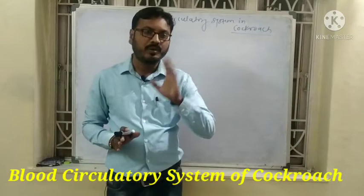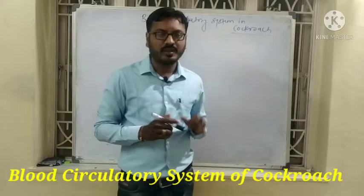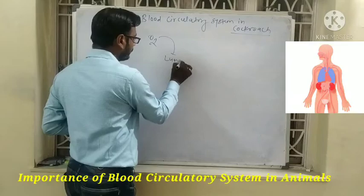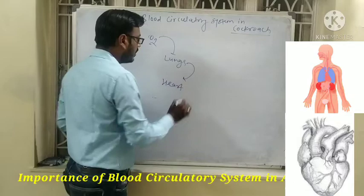First of all, the importance of the blood circulatory system is why it is present in the animal's body. When we do inhalation, oxygen enters into the lungs through our nose, and from the lungs it enters into the heart.